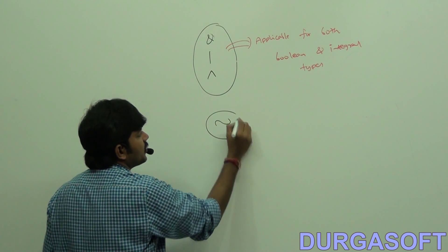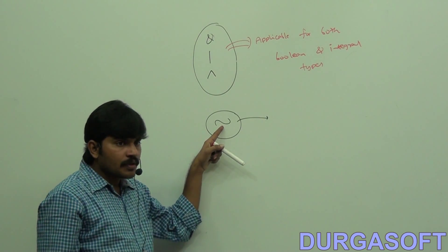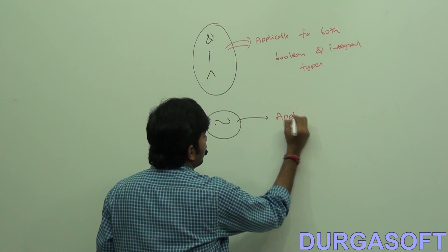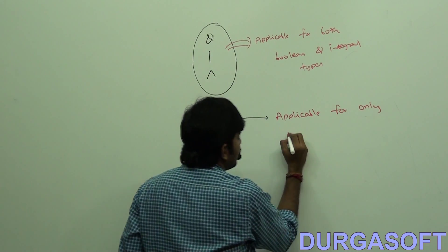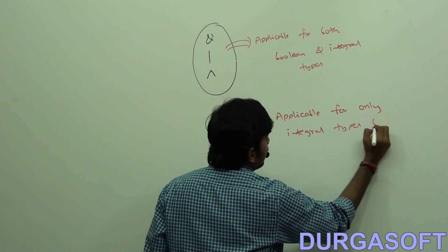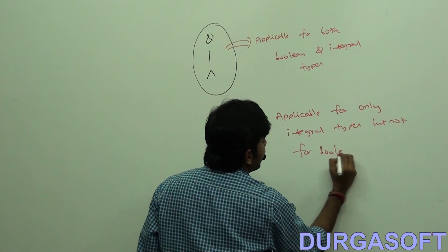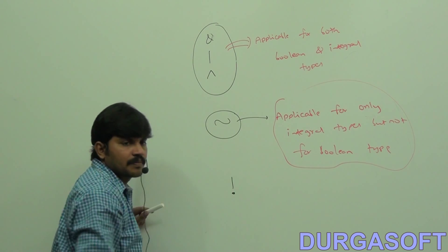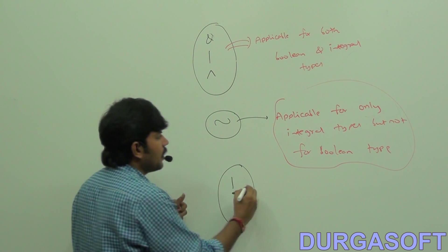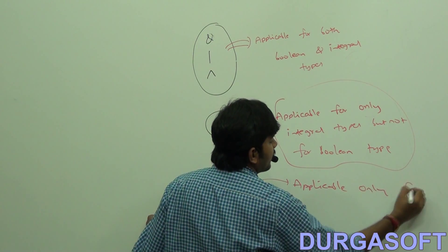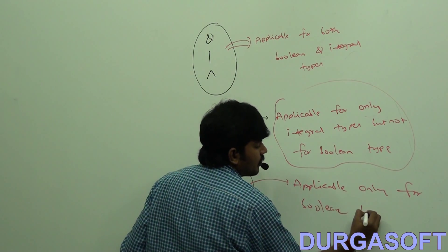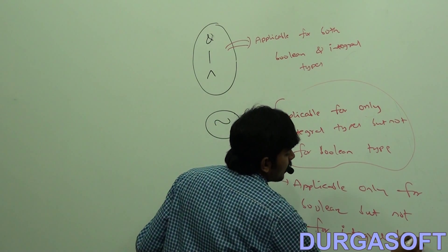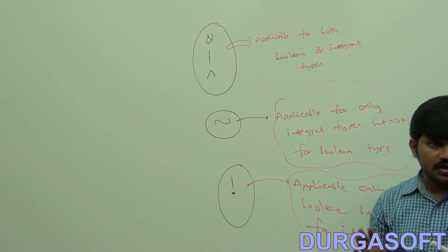This operator — the bitwise complement — is applicable only for integral types but not for boolean type. And the last operator — the boolean complement — applicable only for boolean, but not for integral types. Make sure you people are clear on this. You can take this part.